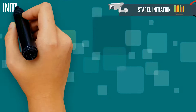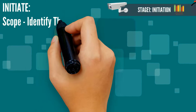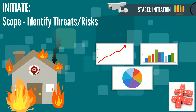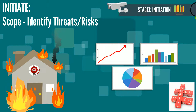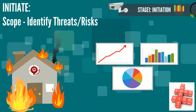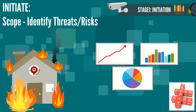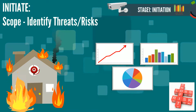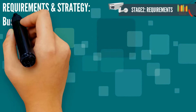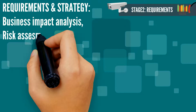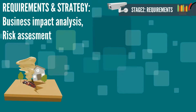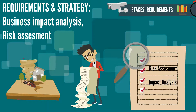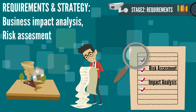There are 4 stages in IT Service Continuity Management. Stage 1 is Initiation, which talks about identifying threats and risks so a policy can be defined and communicated. Stage 2 is Requirements and Strategy, which covers business impact analysis, risk assessment, business continuity strategy, and so on.